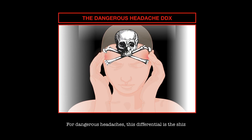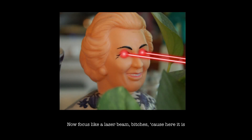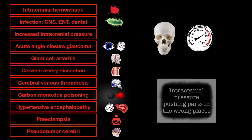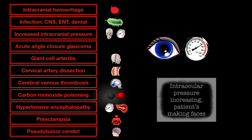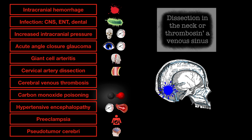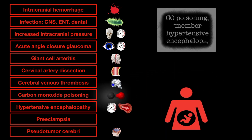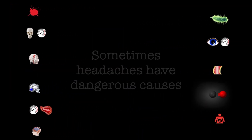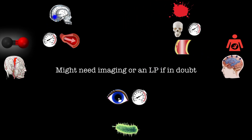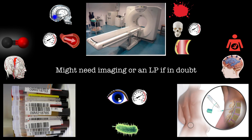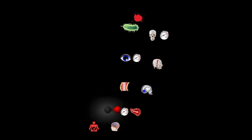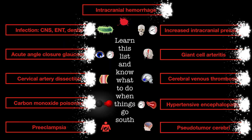For dangerous headaches, this differential is the SHEARS. Now focus like a laser beam: bleeding inside your head — different types of ICH. Infection is CNS, ENT, or dental spaces. Intracranial pressure forcing parts in the wrong places. Intraocular pressure increasing, patients making faces. Pacing around with your giant cell arteritis. Dissection in the neck, thrombosis of venous sinus. CO poisoning, hypertensive encephalopathy, preeclampsia, pseudotumor — these headaches make you drop. Headaches have dangerous causes; H&P usually rules them out, might need imaging or an LP if in doubt. Headaches should give providers pauses — think it through before you send them out. Learn this list and know what to do when things go south.